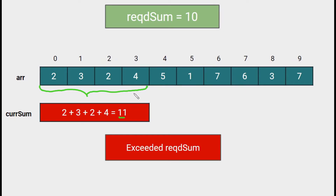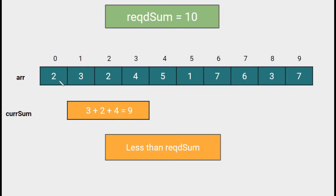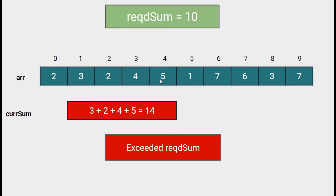Our job is to find a continuous subarray. Since we have to proceed further to check whether we can find the required sum later in the array, we have to remove elements from the beginning of the subarray until the sum becomes less than the required sum. Just on removing the first element 2, the sum is now less than the required sum. We can add one more element, and adding 5 gives us 14 — again, the sum has exceeded.